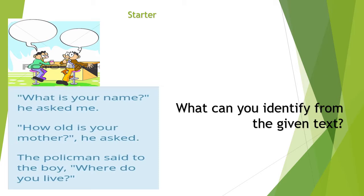What is your name? He asked me. How old is your mother? He asked. The policeman said to the boy, where do you live? What can you identify from these texts? It is a form of a dialogue. Where can we find this dialogue? In a play script.